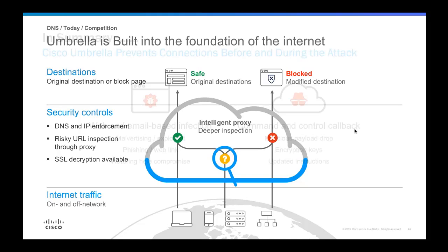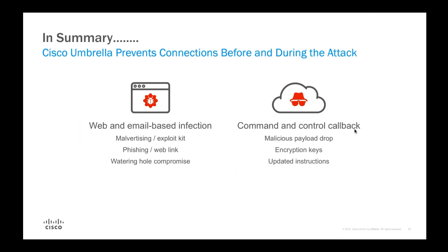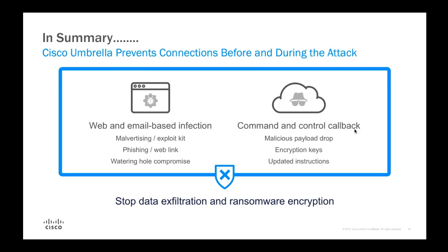In summary, Cisco Umbrella will prevent connections before, during, or after an attack — whether web-based or malvertising-based. We block those connections so you don't get exploits, phishing, or attacks hitting your network. If you are already infected, we prevent the device from reaching command and control infrastructure to download malicious payloads. By doing this, we stop the exfiltration of data or encryption of your data through ransomware techniques.